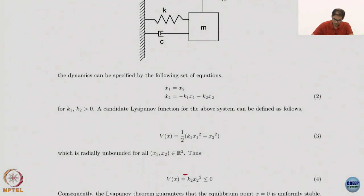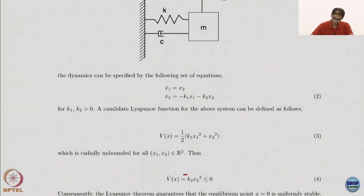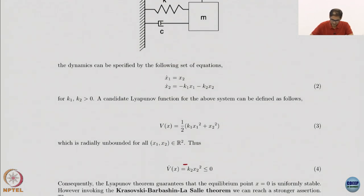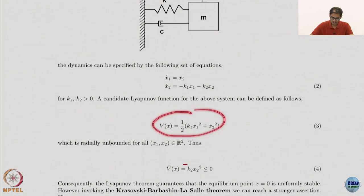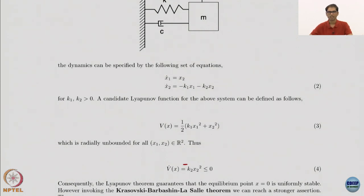This is a very simple linear system corresponding to the spring-mass-damper. The constants don't correspond to the picture but it's easy to derive: one constant is K over M and the other is C over M — very standard dynamics. We choose a standard candidate Lyapunov function, which does turn out to be a valid candidate. For applying the Barbashin-Krasovsky-LaSalle theorem, we need a candidate Lyapunov function: C1 and positive definite. This one is C1, positive definite, and radially unbounded. When you compute V dot, it turns out to be minus K2 times x2 squared, which is negative semi-definite.